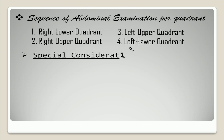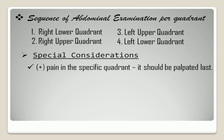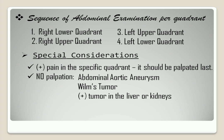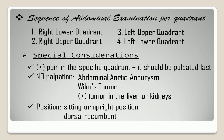Special considerations: if there is pain in a specific quadrant, it should be palpated last. No palpation should be done to patients with suspected abdominal aortic aneurysm, Wilms' tumor, and patients with tumors in the liver or kidneys. The best position is sitting, upright, or dorsal recumbent.